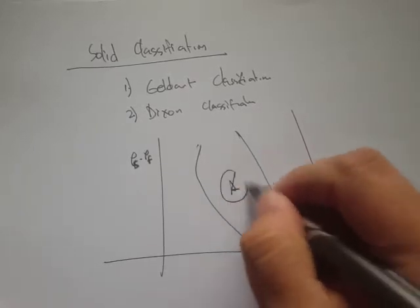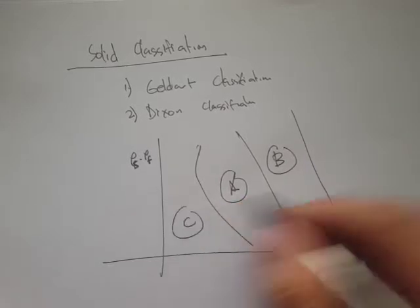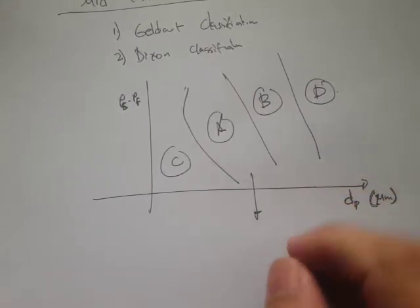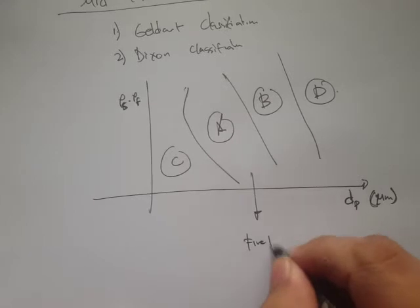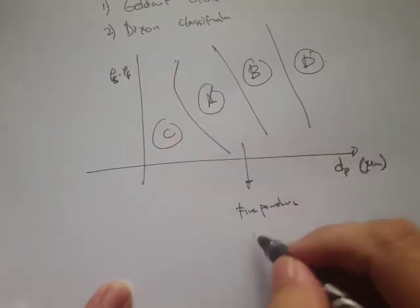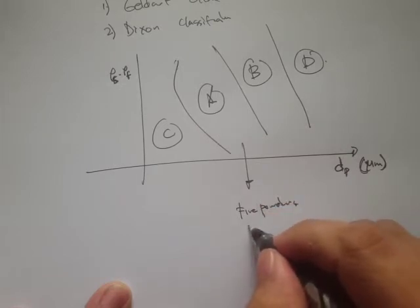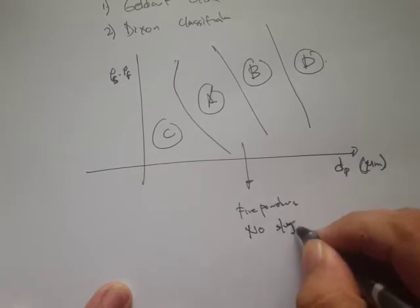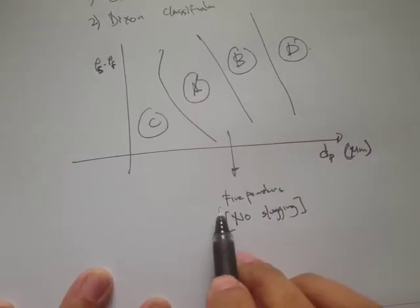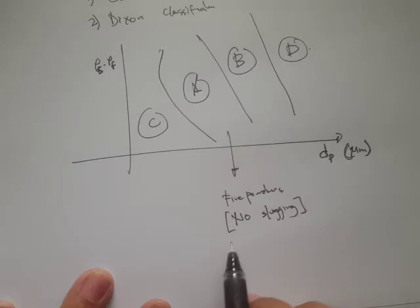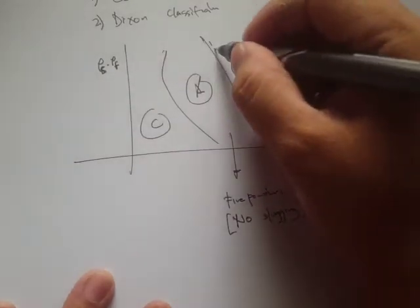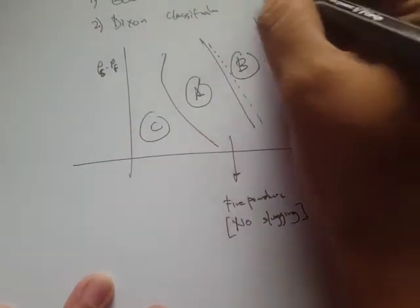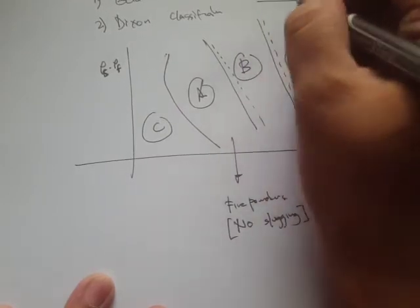On this graph we have Group A, Group B, Group C, and Group D. For Group A, based on Geldart, that's fine powders. Based on Dixon, these materials do not exhibit slugging behavior. There is actually some difference in the boundary lines between the two classifications — the dashed lines represent Geldart and the solid lines represent Dixon.